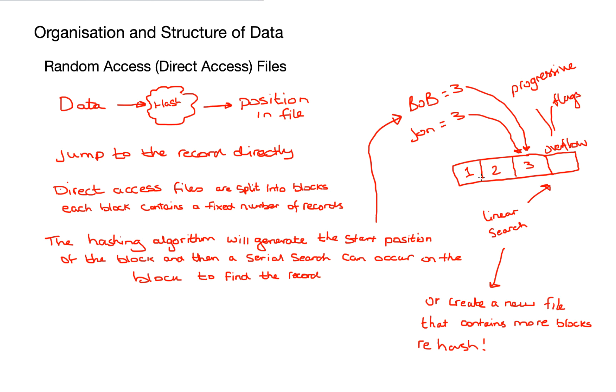One is called progressive overflow, which states that if the location is occupied, then we use the next available location to us. If the end of the file gets reached, then we wrap around and start searching from the beginning again, looking for a free space to put the data.